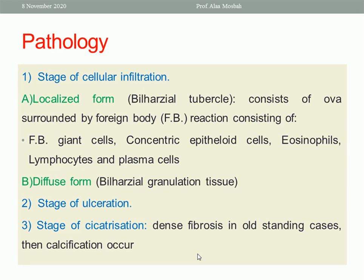The bilharzial tubercle consists of an ovum surrounded by a foreign body reaction, which consists of foreign body giant cells, concentric epithelioid cells, lymphocytes, plasma cells, and eosinophils. The diffuse form causes bilharzial granulation tissue. This stage of cellular infiltration is then followed by the stage of ulceration, then the stage of cicatrization, in which there is dense fibrosis in longstanding cases, which may also become calcified later on.